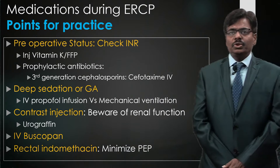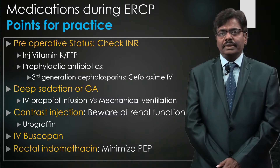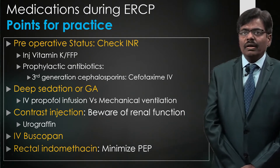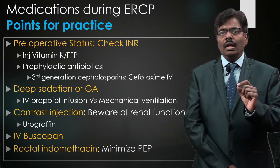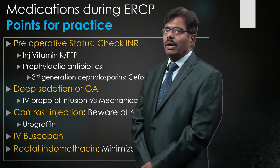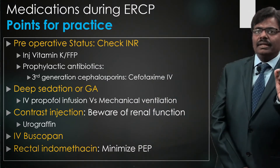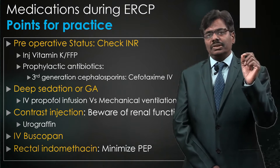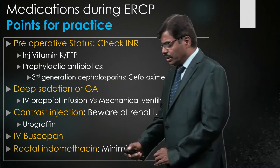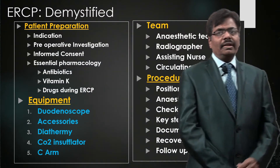Buscopan 20 mg at the right time keeps the duodenum immobile and makes ampullary cannulation better. When there is multiple probing at the ampulla, there is a theoretically increased risk of post-ERCP pancreatitis. This has been proven again and again — giving rectal diclofenac or indomethacin immediately after the procedure minimizes the chance and intensity of post-ERCP pancreatitis.